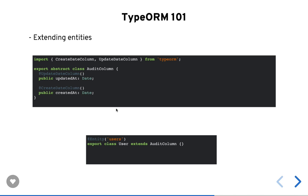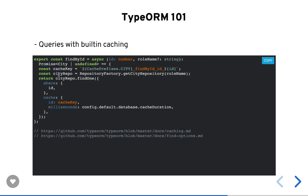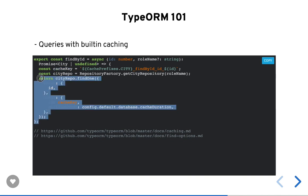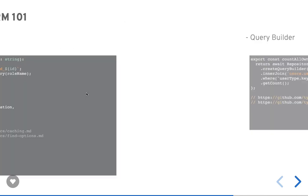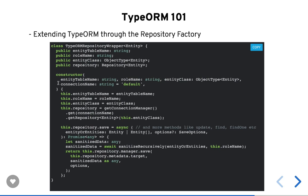With TypeORM entities you can also create base entities and extend them — columns common to all entities can be placed in a base entity and extended everywhere. Built-in caching is also available: for particular queries you can enable caching by providing a repository and a cache key, and TypeORM will internally manage that cache for a specific query. TypeORM also provides a query builder similar to Knex — for example, createQueryBuilder('users') with inner join, a where condition, and a count. You can explore more from the documentation.